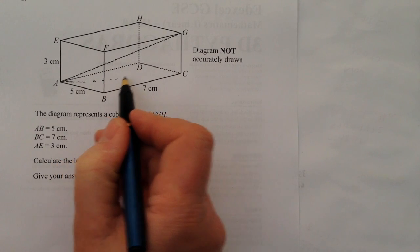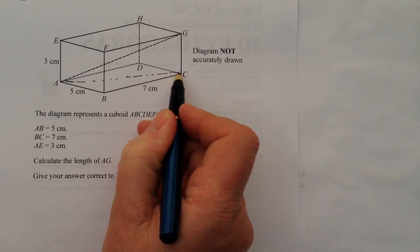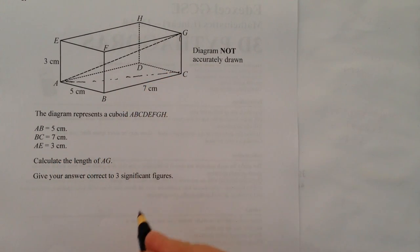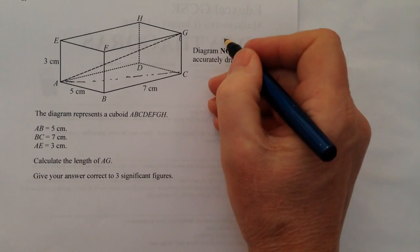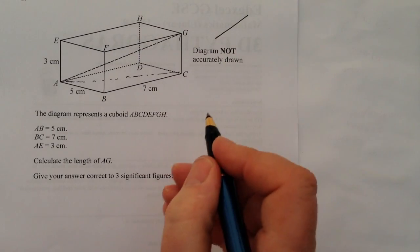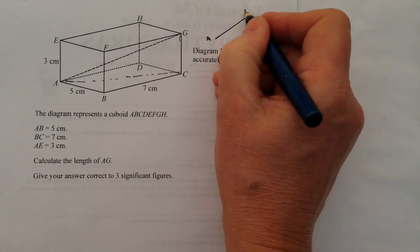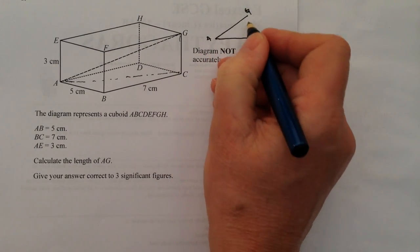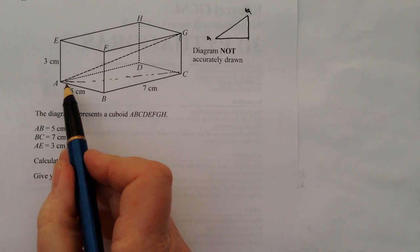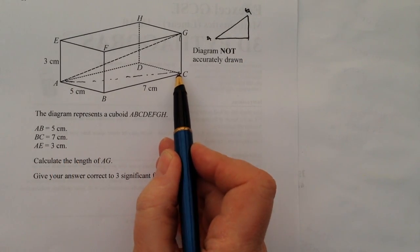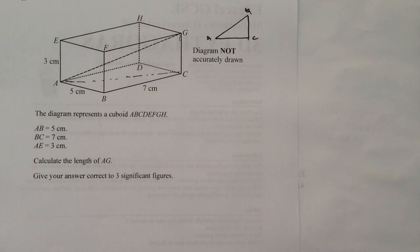So if you can imagine that AG is made up of a triangle that looks like that, I'll just draw that out for you. What you've got is A and G, and then along here we've got A to C and then C to G.